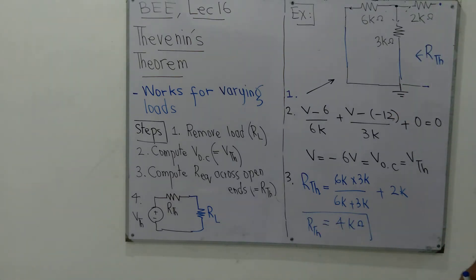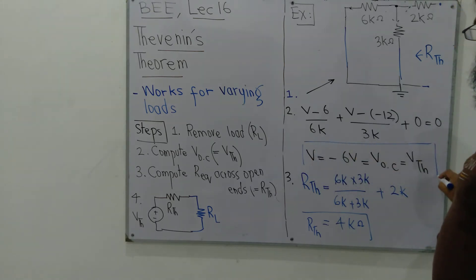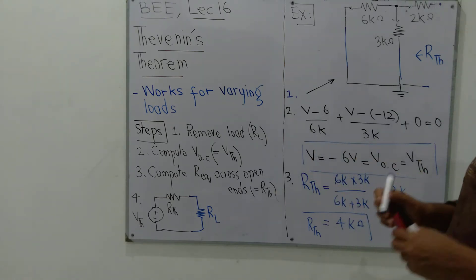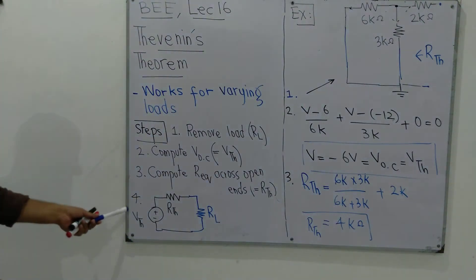So we have computed Vthevenin minus 6 volts and Rthevenin 4kΩ. Now we are ready to execute step number 4.